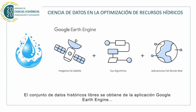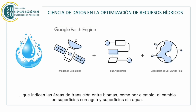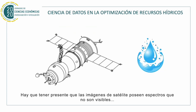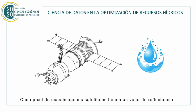The set of free historical data is obtained from the Google Earth Engine application, which allows building different models that provide evidence of state and ecotone changes — indicating areas of transition between biomes, like for example changes of surface with water and surface with no water. We need to keep in mind that these satellite images possess spectrums that are not visible, such as infrared bands and near-infrared bands. Each pixel of these satellite images has a reflectance value.